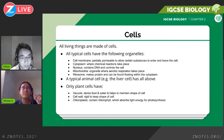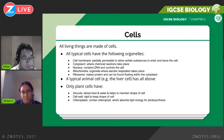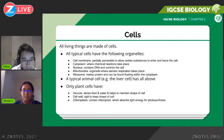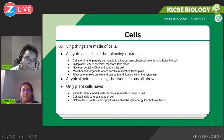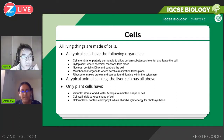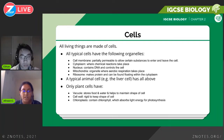Cytoplasm is a jelly-like sap substance, and this is where all the chemical reactions in the cell take place. The nucleus contains the DNA and controls the cell — it's basically the control center of the cell. Then there's mitochondria, the organelle where aerobic respiration takes place.